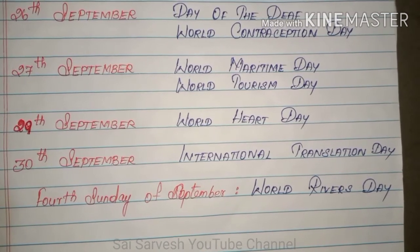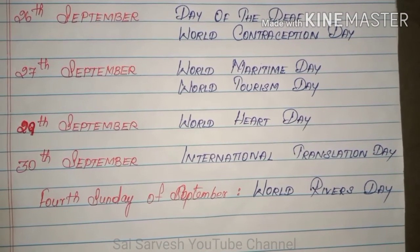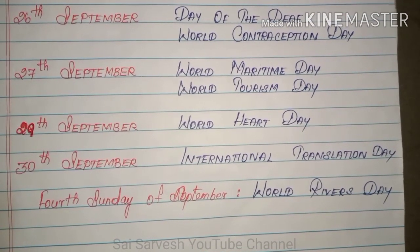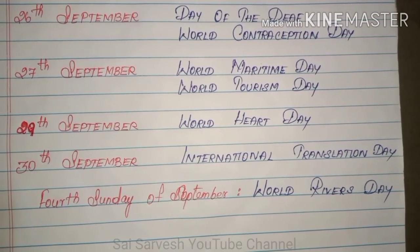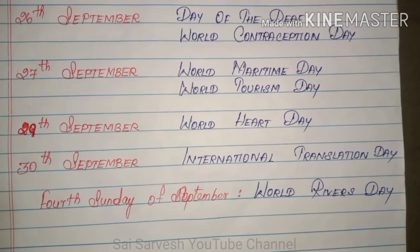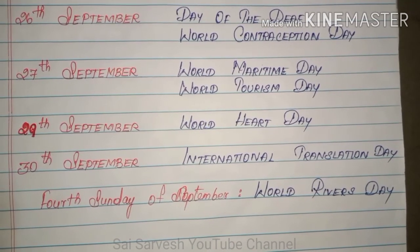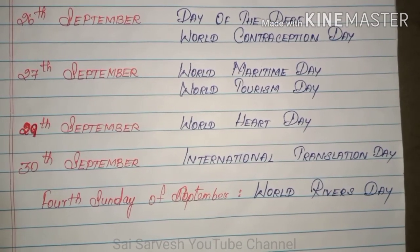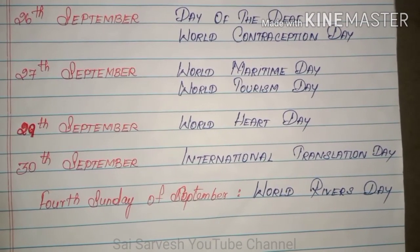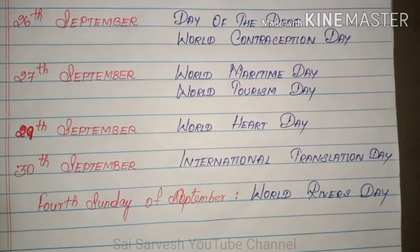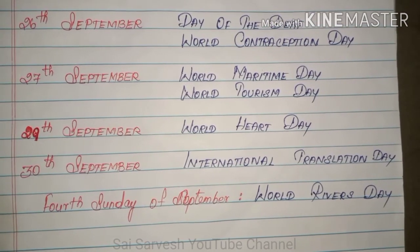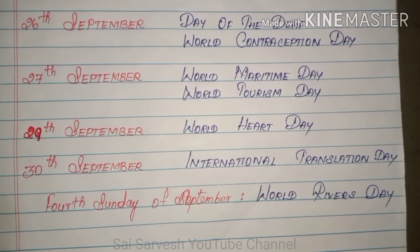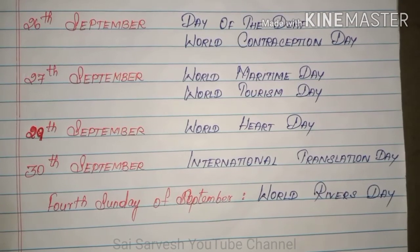29th September: World Heart Day. 30th September: International Translation Day. The 4th Sunday of every September is World Rivers Day. Thank you for watching — please like, comment, share, and subscribe.